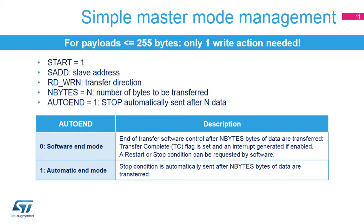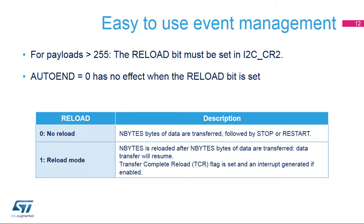If the auto end bit is set, the stop condition is automatically sent after the programmed number of bytes is transferred. If the auto end bit is not set, the end of transfer is managed by software. After the programmed number of bytes is transferred, the transfer complete or TC flag is set and an interrupt is generated if enabled. Then a repeated start or a stop condition can be requested by software. The data transfer can be managed by interrupts or by the DMA.